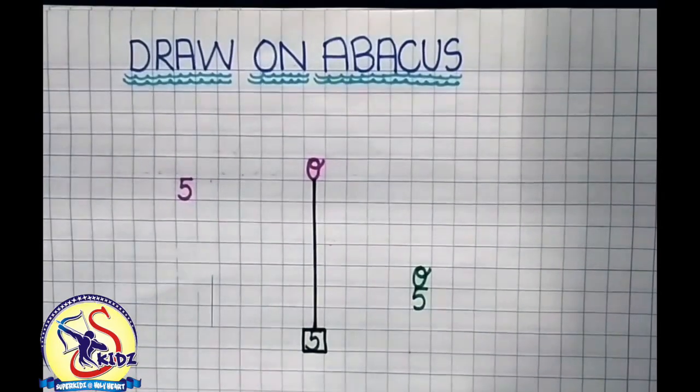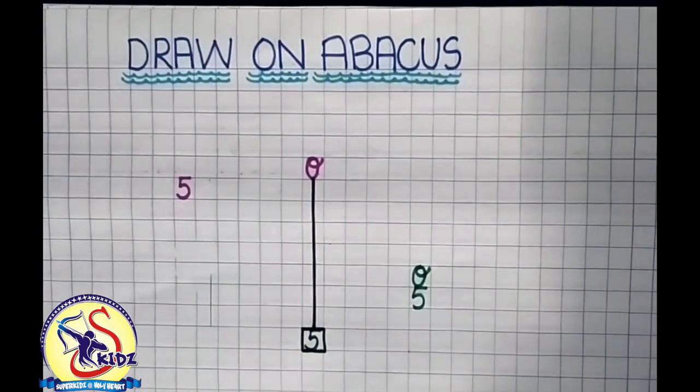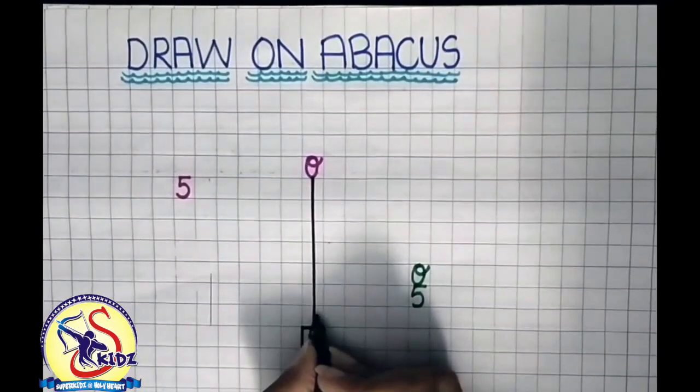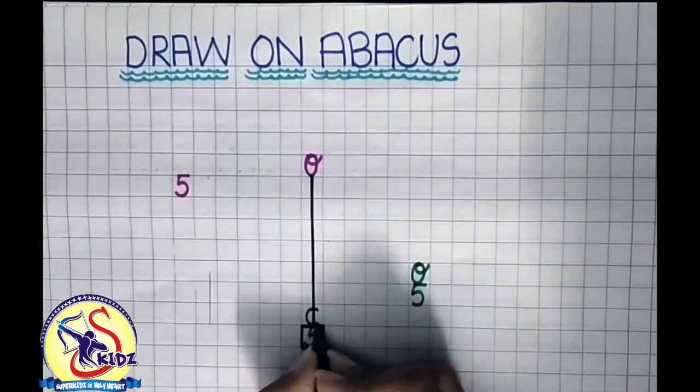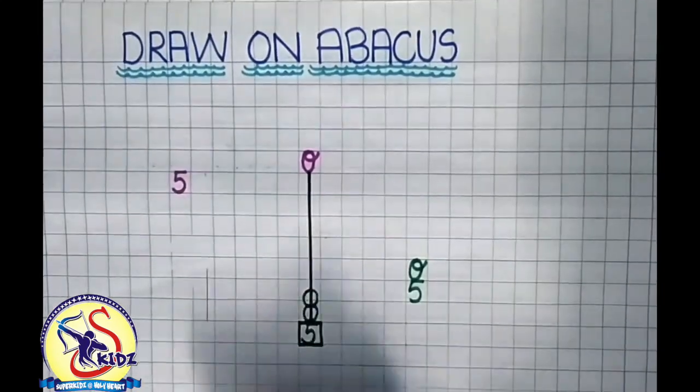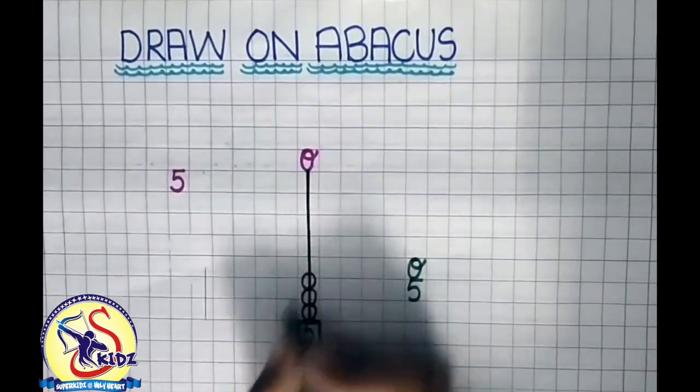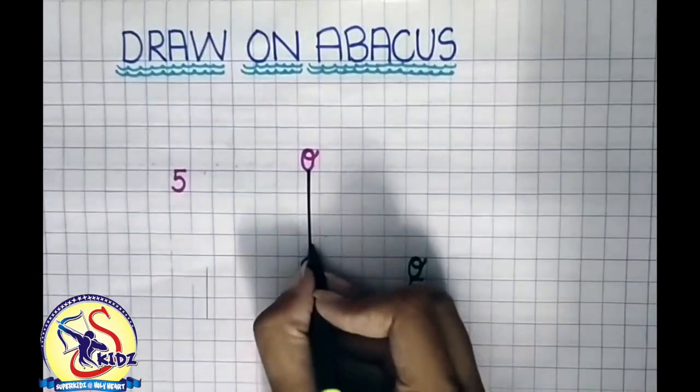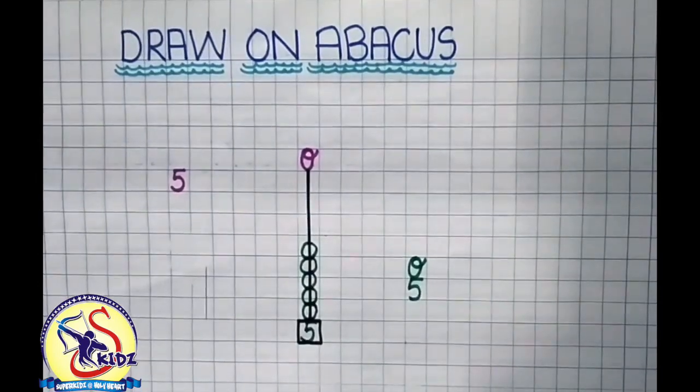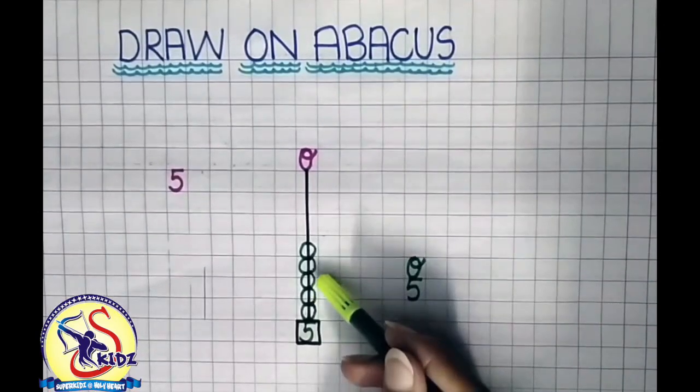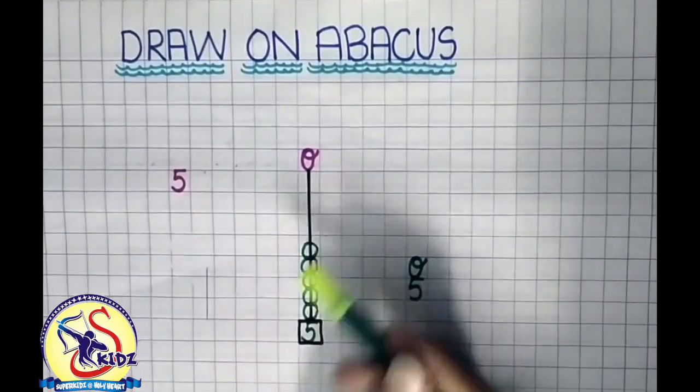Now we will make 5 beads on the Abacus. Let's start: 1, 2, 3, 4, 5. Let's count. Kids, how many beads are there? 1, 2, 3, 4, 5.